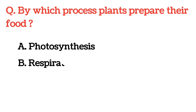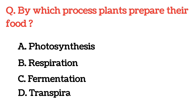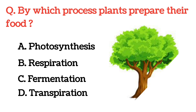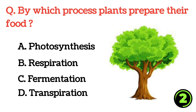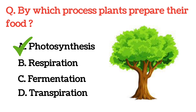By which process do plants prepare their food? The correct answer is Option A: Photosynthesis.